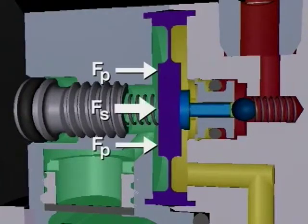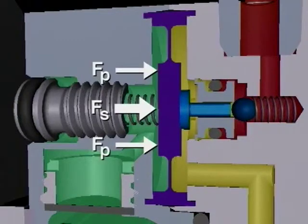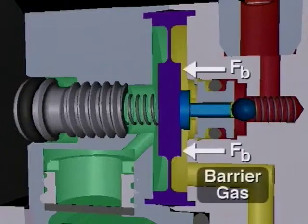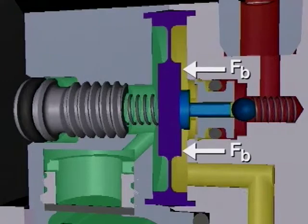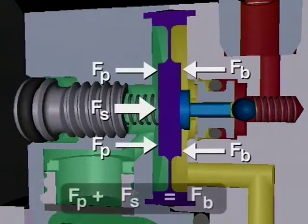An additional force is created by the differential screw and bias spring located on the left side. This adjustable spring force creates the differential between process and barrier fluid pressures and is factory calibrated to provide an additional pressure of 20 psi. The barrier gas pressure on the right side of the diaphragm creates a force working to the left. When the diaphragm is in the middle neutral position, the barrier gas pressure force is equal to the process pressure force plus the adjustable spring force.